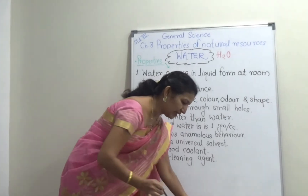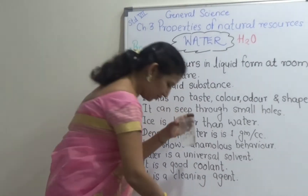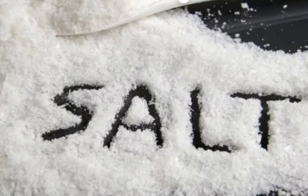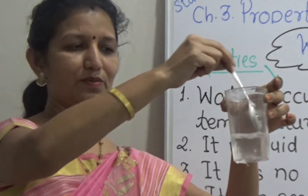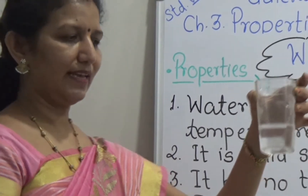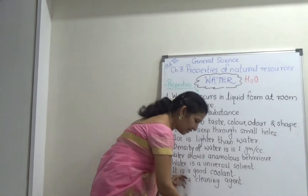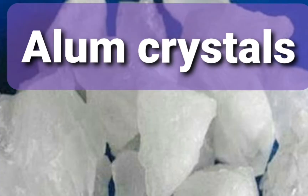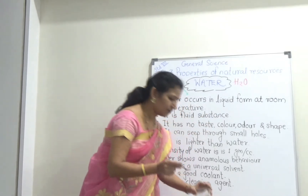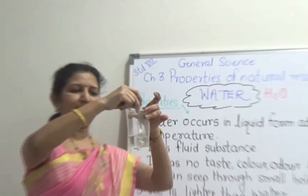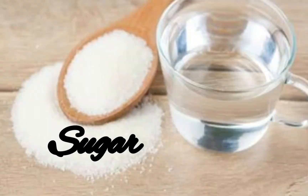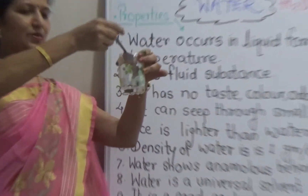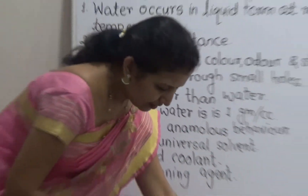There are so many soluble things. For example, I am adding salt to water — when I add salt, these salt crystals will completely dissolve in a few seconds because they are soluble in water. After that, I will take alum crystals, and these alum crystals will also dissolve in water very easily. Then sugar — add sugar to water. We know sugar can dissolve in water completely. In this way, water is called a universal solvent.